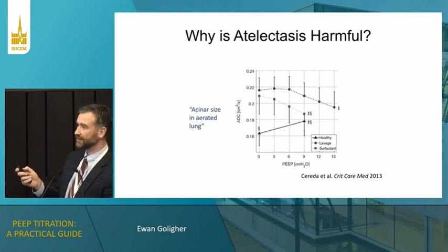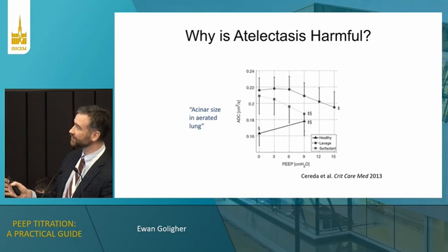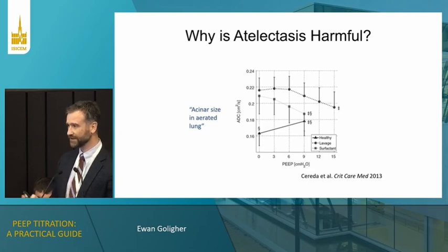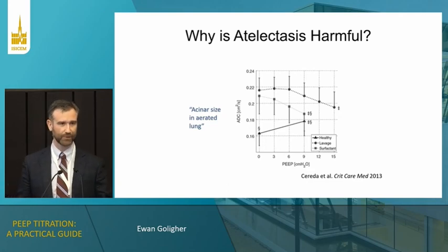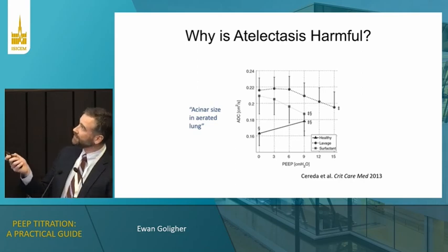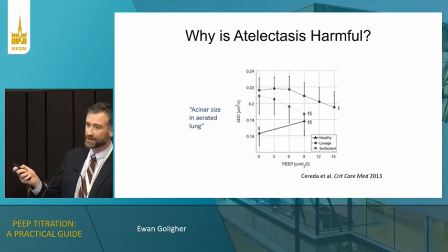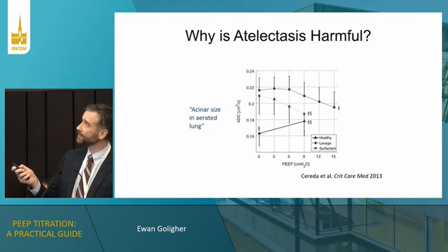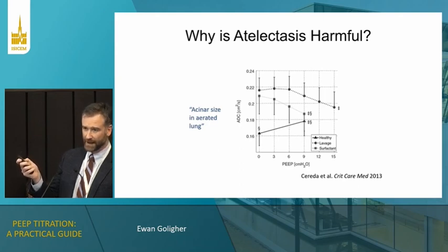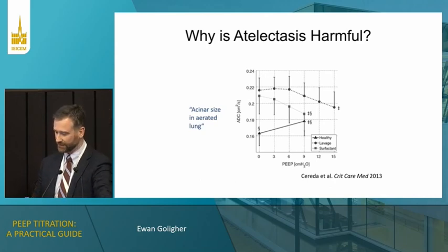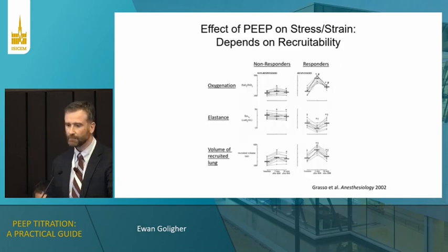This is a highly recruitable experimental model — lavage with surfactant restoration is the sine qua non of a recruitable model — so of course you see physiological improvement. What you don't want is an injured lung where acinar size at baseline is much higher because of all collapsed lung units not participating in ventilation, and then you turn up PEEP and further increase acinar size. That would be a bad response that further exacerbates stress and strain. This is really what we're trying to avoid and what we're trying to target when titrating PEEP.